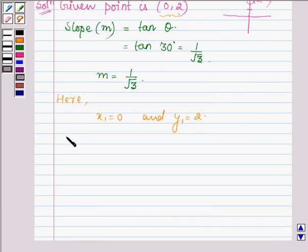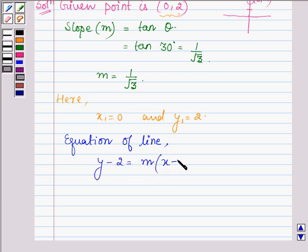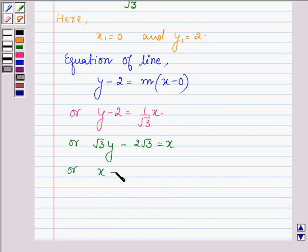Therefore, the equation of the line is equal to y minus 2 is equal to m times x minus 0, or we have y minus 2 is equal to 1 upon root 3 into x, or root 3y minus 2 root 3 is equal to x, or x minus root 3y plus 2 root 3 is equal to 0.